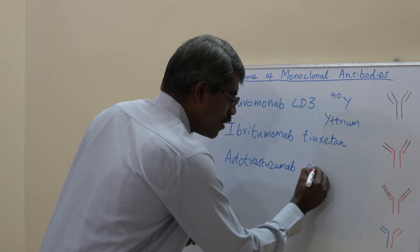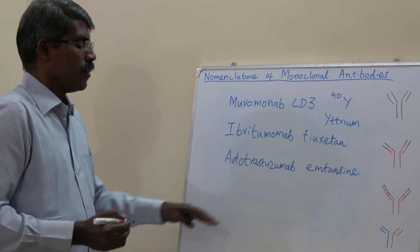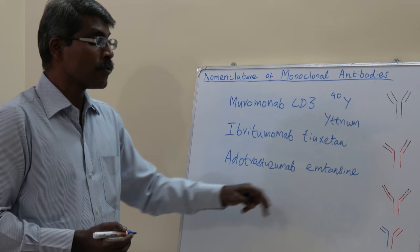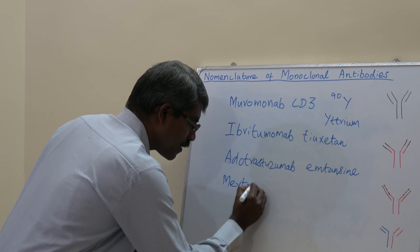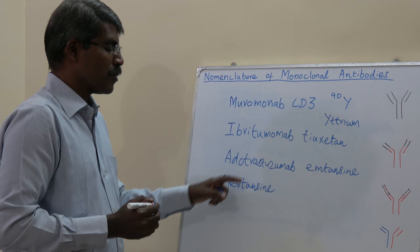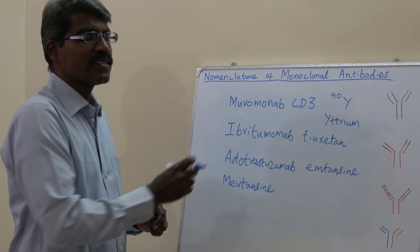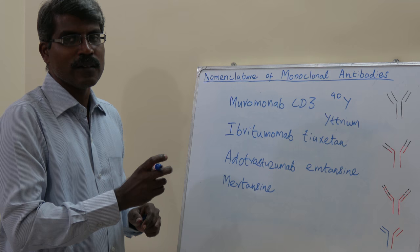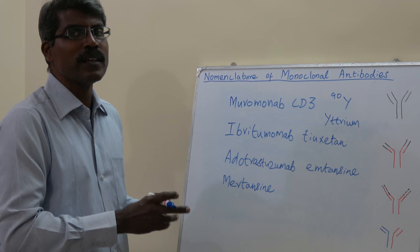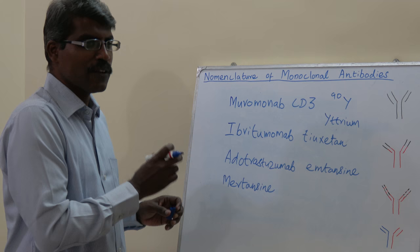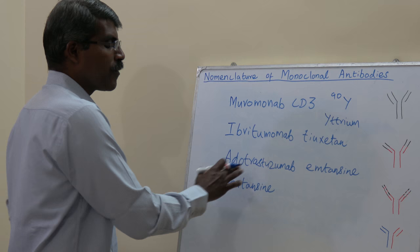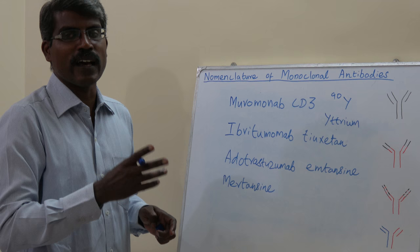Another example is ado-trastuzumab emtansine. This is a monoclonal antibody against HER2/neu and is linked to the drug emtansine, a microtubule disruptor. When the monoclonal antibody binds to a breast cancer cell, the drug is released to destroy it — this is targeted therapy. So if a mAb is linked to a drug or isotope, it will have two names: the first indicating the antibody, the second the linked substance.